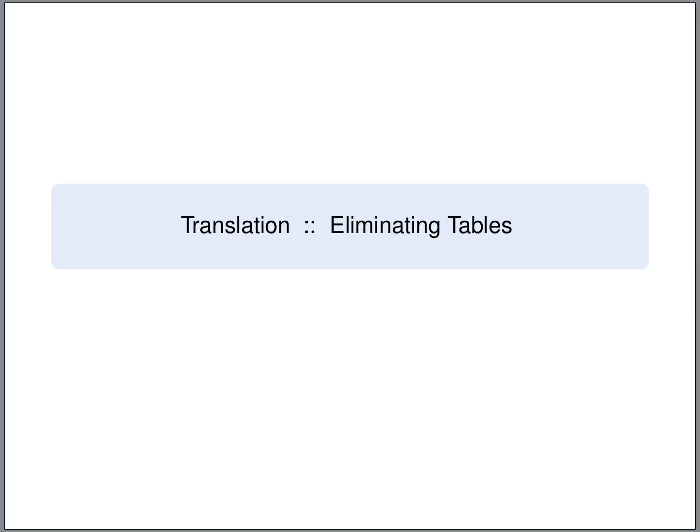So far we have seen the basic translation, but now we will see that often a relationship set does not need a separate table. So often we can eliminate the tables for relationship sets. This has two possible reasons. For one, we might want to do this for efficiency, to avoid unnecessary join operations. The other reason is that when we eliminate tables, we get more possibilities to express cardinality constraints by the design.